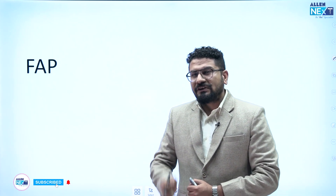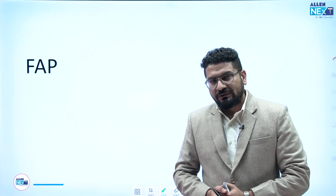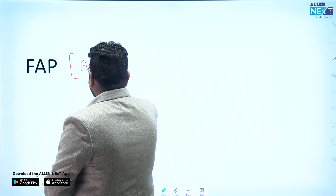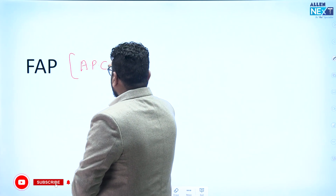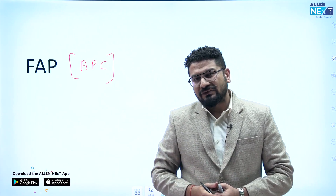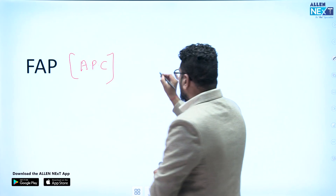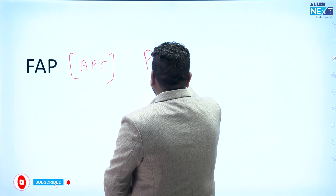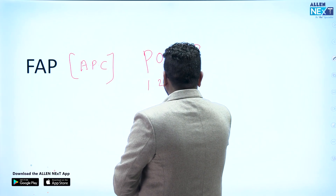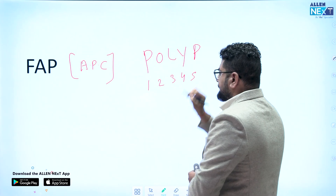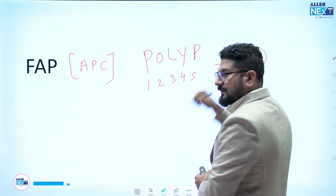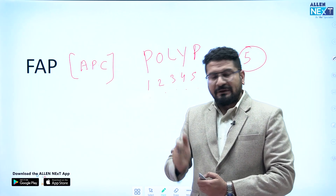Moving to the next one: FAP, which means familial adenomatous polyposis. This is basically a defect due to the APC gene — adenomatous polyposis coli gene. In this condition, the patient will have more than 100 polyps, which are 100% pre-malignant. If you count the polyps: 1, 2, 3, 4, 5 — chromosome number for this condition is 5. So FAP is at chromosome number 5.